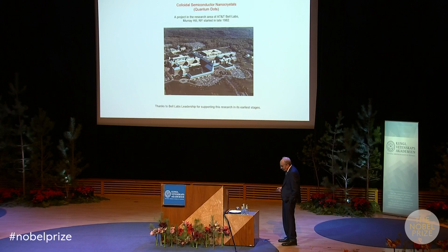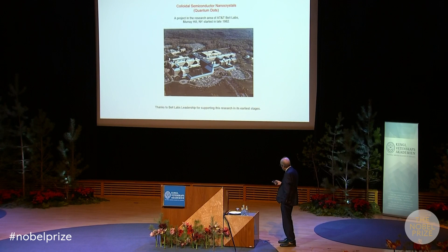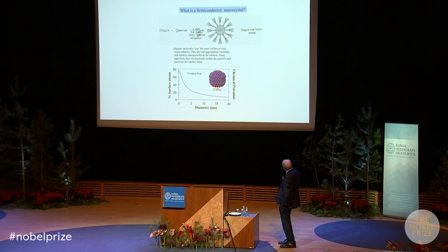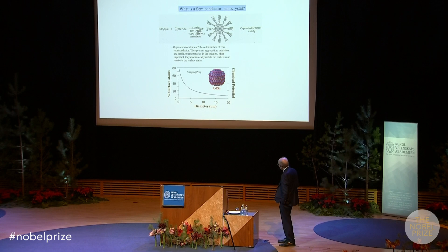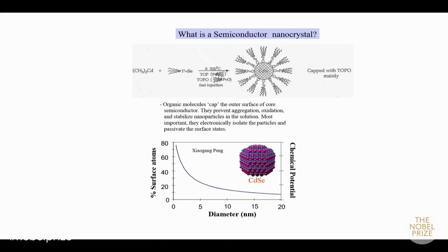Let's begin with what is a semiconductor nanocrystal. As Alexei was describing, it's a small piece of rock. In this case, it might be 30 angstroms in diameter — maybe 10 atoms across from one side to the other. About 40% of the atoms are actually on the surface. It's made by chemical synthesis, creating a colloid with a 30 angstrom diameter particle with ligands on the surface to give stability and functionality.